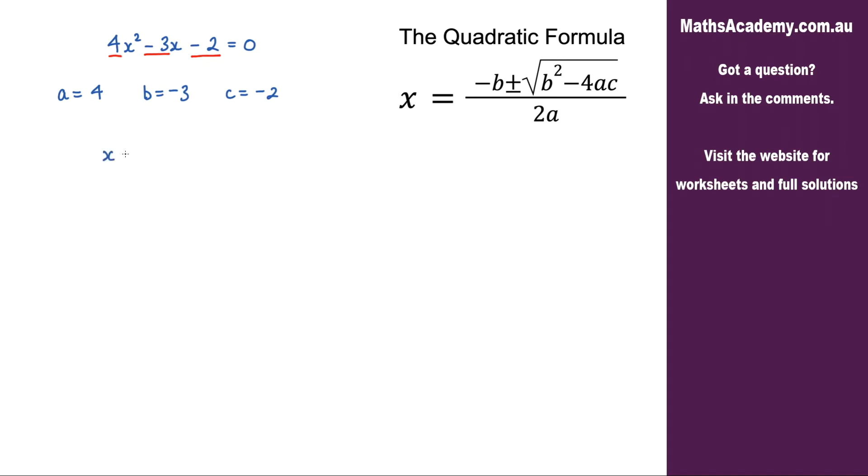We can now go ahead and substitute those values into the quadratic formula. So we've got minus b, and b is negative 3, plus or minus the square root of b squared, so negative 3 squared, minus 4 multiplied by a which is 4, multiplied by c which is negative 2. And that is all over 2a, so 2 multiplied by 4.